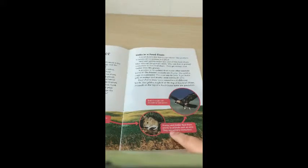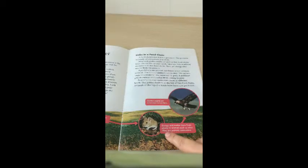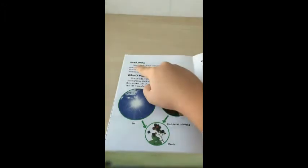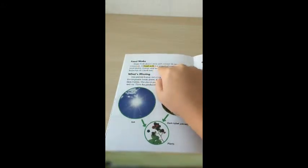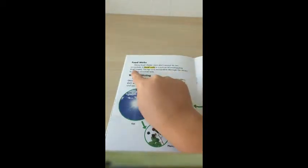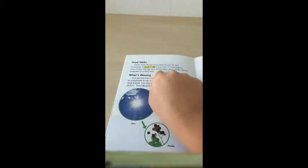Energy and matter flows from plants to animals, such as mice. They are primary consumers. Food web. Many food chains cross and connect in one ecosystem. A food web is a system of overlapping food chains. Energy and matter flow through the many branches of a food web.